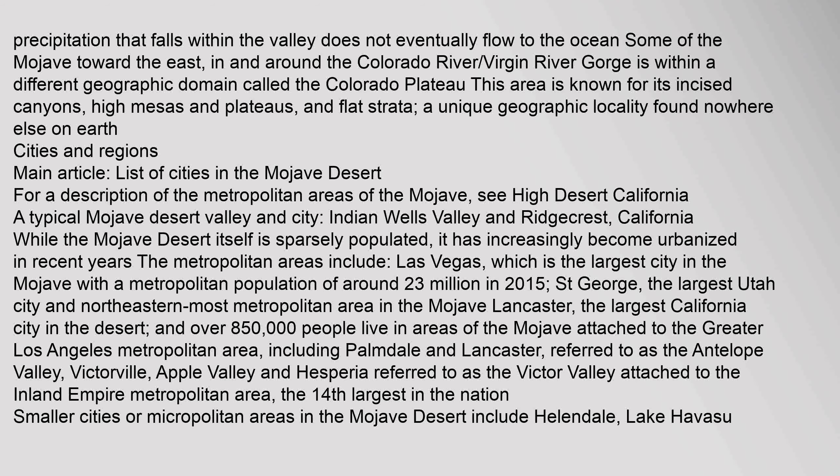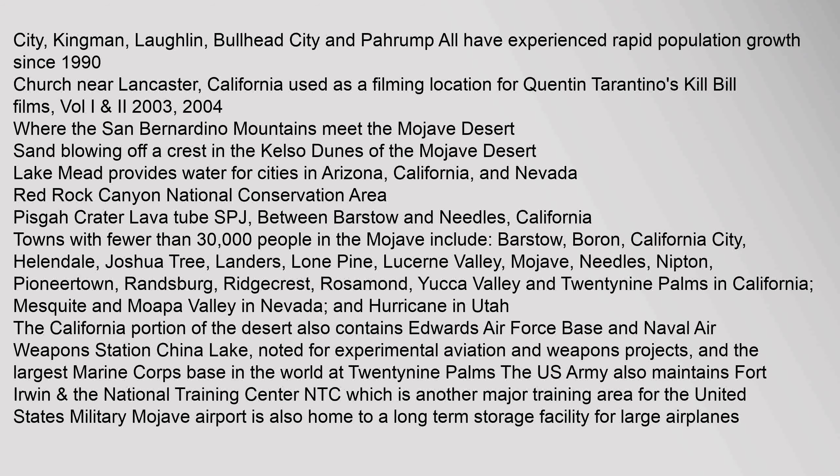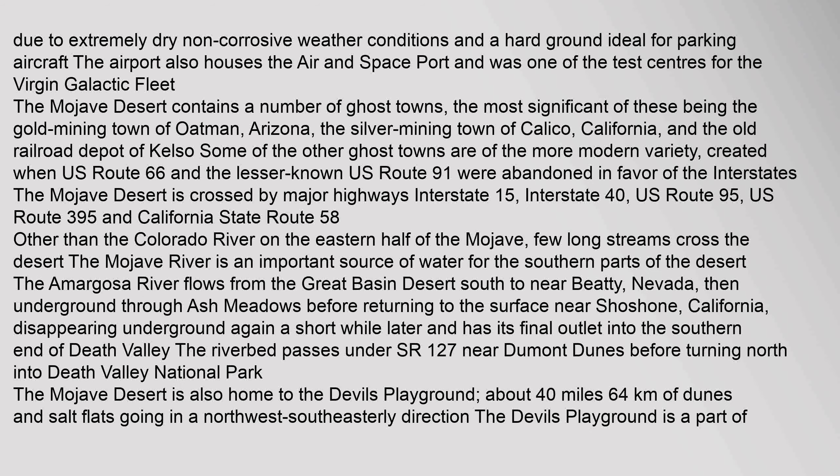Smaller cities or micropolitan areas in the Mojave Desert include Hellandale, Lake Havasu City, Kingman, Laughlin, Bullhead City, and Pahrump — all have experienced rapid population growth since 1990. A church near Lancaster, California was used as a filming location for Quentin Tarantino's Kill Bill Films, Volume 1. Due to extremely dry, non-corrosive weather conditions and hard ground ideal for parking aircraft, the Mojave airport houses the Air and Space Port and was one of the test centers for the Virgin Galactic Fleet. The Mojave Desert is crossed by major highways: Interstate 15, Interstate 40, U.S. Route 95, U.S. Route 395, and California State Route 58.